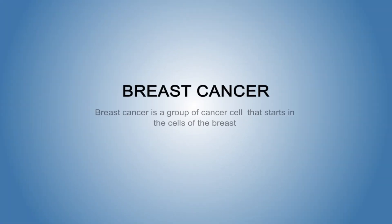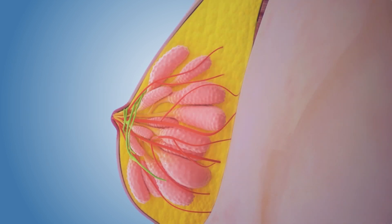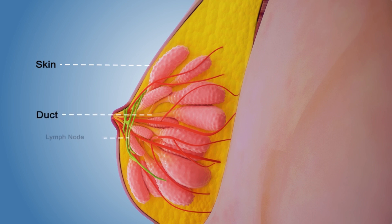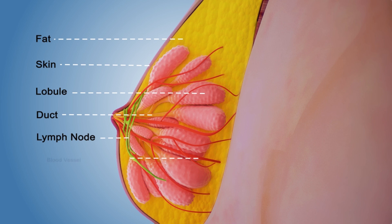Breast cancer is a group of cancer cells that starts in the cells of the breast. The human breast consists of skin, ducts, lymph nodes, lobules, fat, and blood vessels.